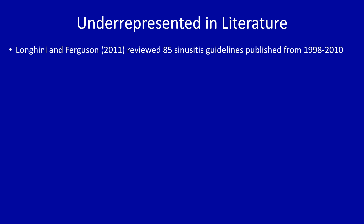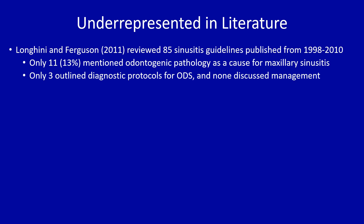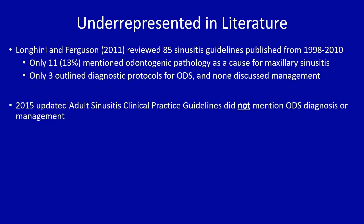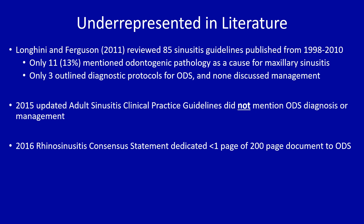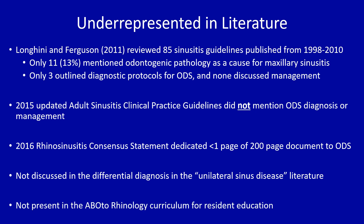One of the reasons many are not aware of odontogenic sinusitis is that it's underrepresented in the literature. Longini and Ferguson reviewed 85 sinusitis practice guidelines published from 1998 to 2010 — only 11 mentioned odontogenic pathology as a cause, only three outlined diagnostic protocols, and none discussed management. The 2015 adult sinusitis clinical practice guidelines did not mention odontogenic sinusitis, and the 2016 rhinosinusitis consensus statement dedicated less than one page of a 200-page document to it. It's also absent from the differential diagnosis in unilateral sinus disease literature and not present in the otorhinolaryngology curriculum for resident education.